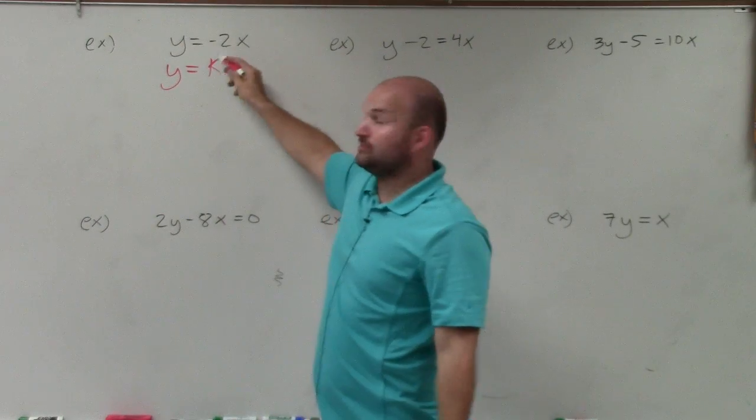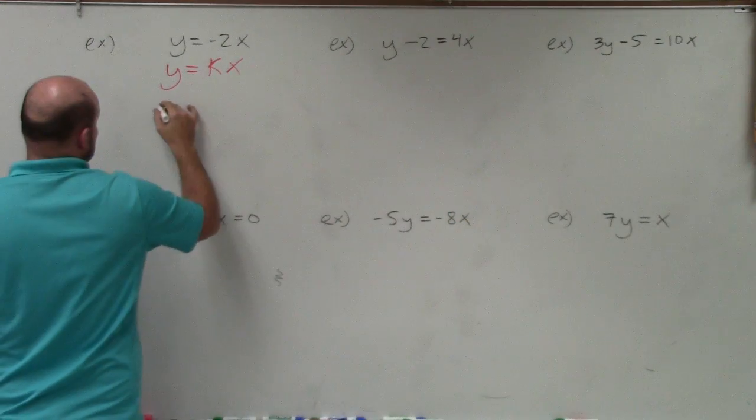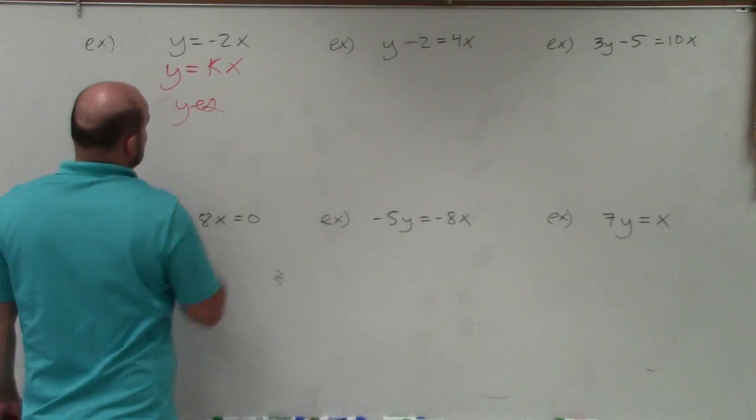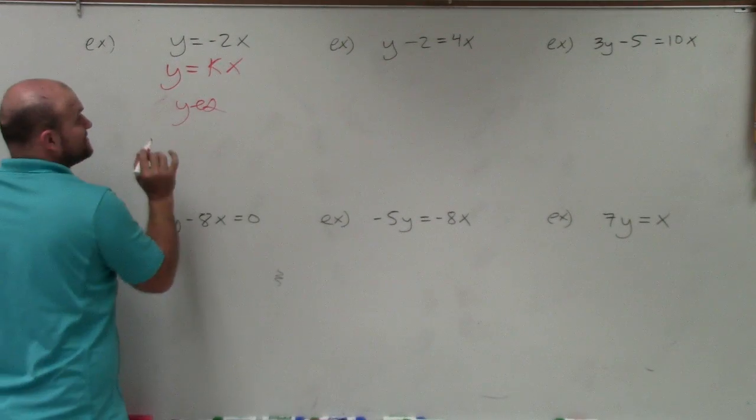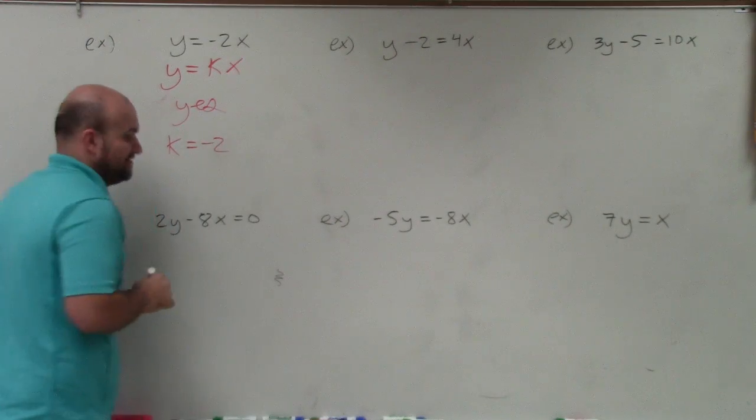So you can see y equals negative 2 times x. Well, negative 2 is multiplied by x. Yes. So this is direct variation. I'm going to write yes, because that's what I'm asking you. Does it represent that? Yes. And if so, what is k? What is our constant? Well, k in this case is negative 2.